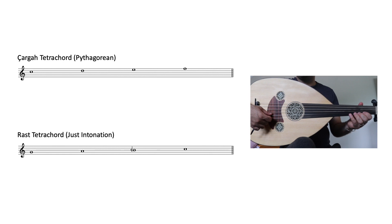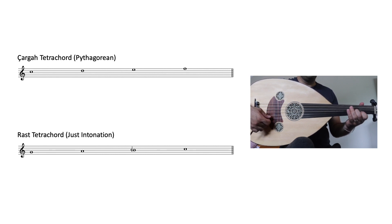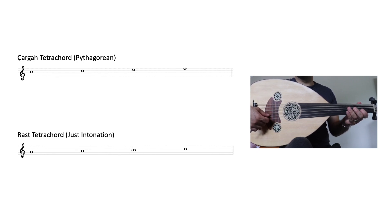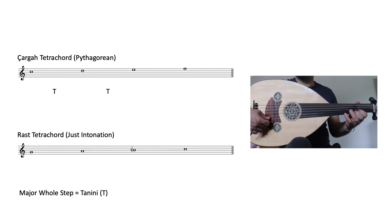Now, between chargah and rast, I have two types of whole step — one slightly bigger, the Pythagorean, or from the chargah tetrachord, and one slightly smaller, the just, or rast tetrachord. In Western music, these are known as major and minor whole steps. In Turkish, they are known as tanini and büyükmücennep.